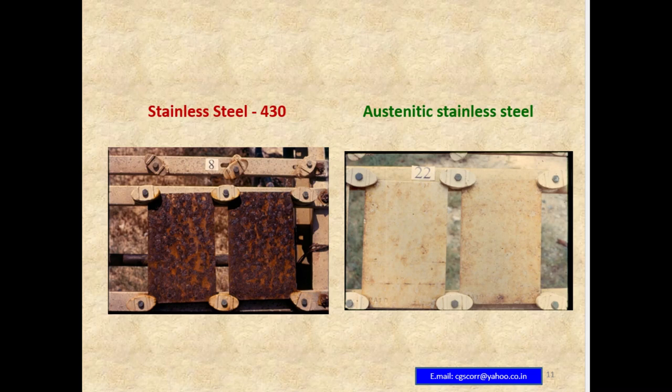This will illustrate examples of stainless steel 430 exposed in marine atmosphere for about six months. You can see it is severely corroded — a misnomer compared to this marine atmosphere — because the chromium content is less, that is why it is covered severely. On the right side, you can see austenitic stainless steel exposed in the marine atmosphere for about 20 years. You can see there is not much pitting, only stains along the rolling direction.